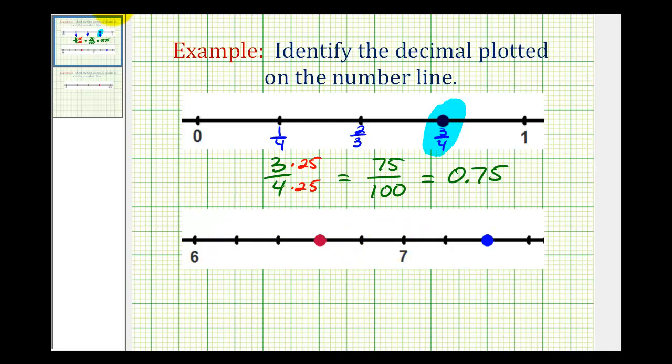So this would be six and one-fifth, six and two-fifths, six and three-fifths, six and four-fifths, and then we're finally at seven. Maybe I should include the sixes here just to be more accurate. But now our goal is to rewrite six and three-fifths as a decimal.